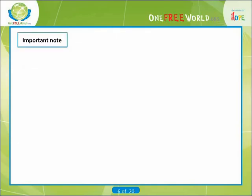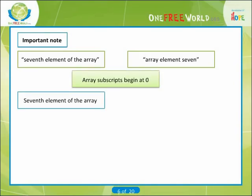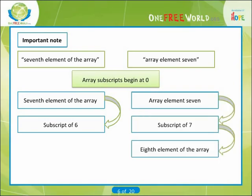It is important to note the difference between the 7th element of the array and array element 7. Because array subscripts begin at 0, the 7th element of the array has a subscript of 6, while array element 7 has a subscript of 7 and is actually the 8th element of the array. This is a source of off-by-one errors.